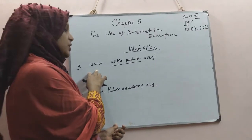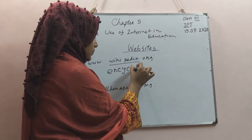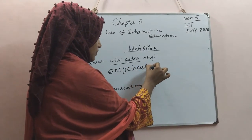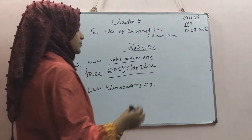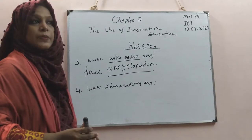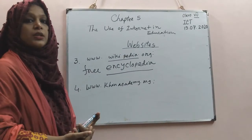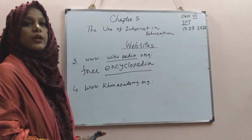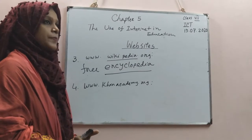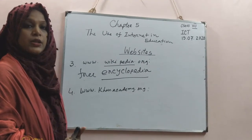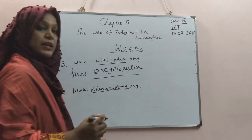Now www.wikipedia.org — this is the most popular and free encyclopedia on the internet. It provides information in almost 200 languages and you can find over 40 million articles here. Some of them are education-related. Then www.khanacademy.org — Khan Academy.